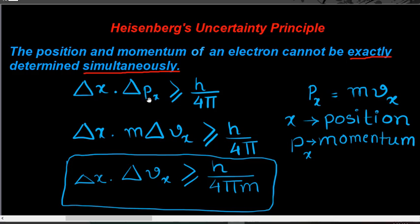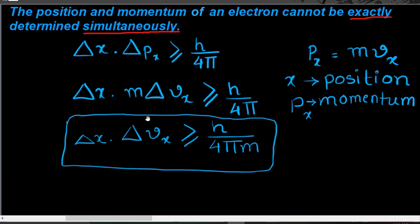Since momentum px equals m·vx, substituting into the equation gives Δx · m·Δvx ≥ h/4π. Since the uncertainty in mass is always very small, we treat it as a constant factor. Transferring mass m to the right-hand side gives: Δx · Δvx ≥ h/(4πm).